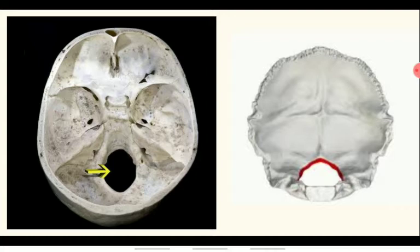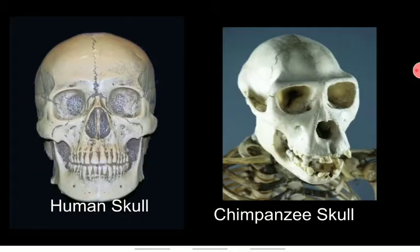When we look at smaller animals like chimpanzees, the foramen magnum is in a tilted, angled position because the neck is not straight, so a vertical position cannot be adapted. This is the foramen magnum change.